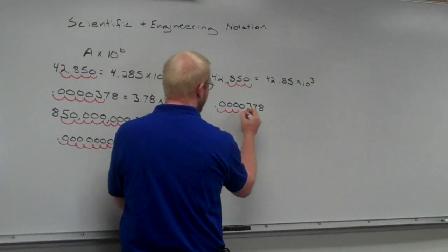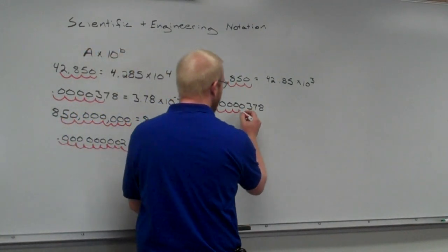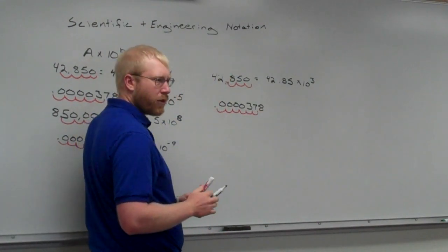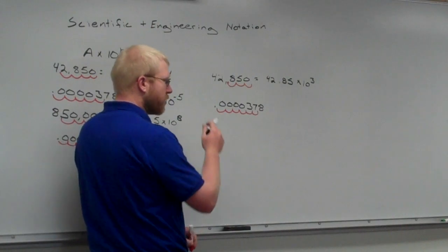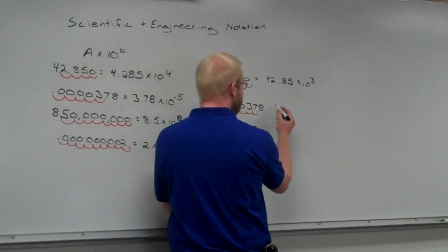So, 1, 2, 3. Do I have a number in front of my decimal place yet? No. So, I'm going to do another 3. 1, 2, 3. So, there I've got 2 numbers, right? Is that okay? Yeah. With the engineering notation, it's okay. We want 1 to 3 different numbers in front of the decimal.